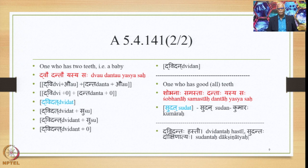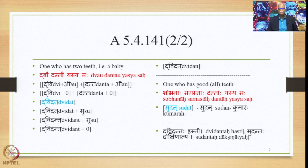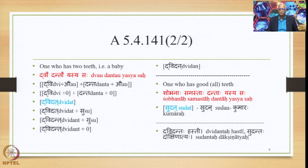Similarly, one who has good — that is, all — teeth: Shobhanah Samasthah Dantah Yasya Sah. By undergoing the same process we derive the finally derived Samasa output as Sudhat, and the Prathama Ekavachana of this would be Sudhan. This indicates the age, that is the Kumara, a young person. When the age is not denoted by the Samasa we do not substitute Datt in place of Danta, and then we derive compounds like Dvidantah Dvidantah Hasti and Sudantah Dakshanatyah where there is no age indication.